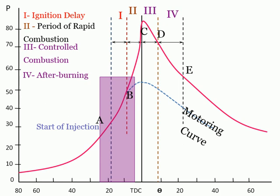Both physical and chemical processes must take place before a significant fraction of the chemical energy of the injected liquid fuel is released. The physical processes are: atomization of the liquid fuel jet, vaporization of the fuel droplets, and mixing of the fuel vapor with air. The chemical processes are the pre-combustion reactions of the fuel, air, and residual gas mixture which lead to auto-ignition.